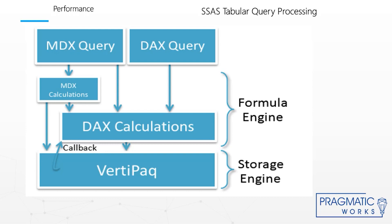The formula engine is single-threaded per query. The storage engine is designed to very efficiently scan compressed data in memory. During a scan, the entire column, all partitions, and all segments are scanned, even in the presence of filters. Given the columnar storage of VertiPaq, the scan is very fast because the data is in memory — no I/O is incurred. Unlike the formula engine, a single storage engine query can be answered using multiple threads — one thread per segment per column. Some very simple operations such as filters, sums, multiplication, and division can also be pushed down into the storage engine, allowing queries that use these calculations to run multithreaded.